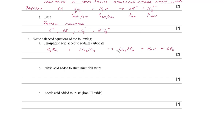The key is to look for patterns. I've got three sodiums and two sodiums, so the common factor is six — three twos are six, two threes are six. So I need two phosphates and three carbonates. There are six hydrogens combining with the oxygen from the carbonate, giving three waters. Remember to leave the polyatomic anion phosphate as a group throughout.